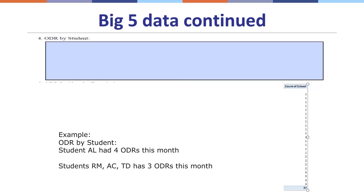The next part of the action planning template asks me to look at which students had the most referrals for the month. Student AL had four discipline referrals, while students RM, AC, and TD had three referrals each. This helps me understand whether behavior interventionists or psychologists have been able to work with these students. These might be students where I can do some easy interventions and get some quick wins after taking a deeper look into why they're being sent to the front office.